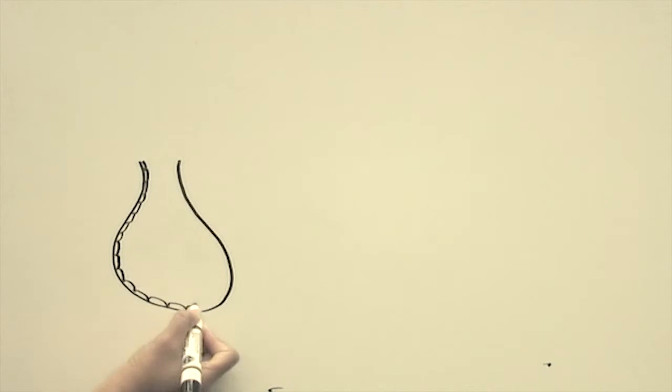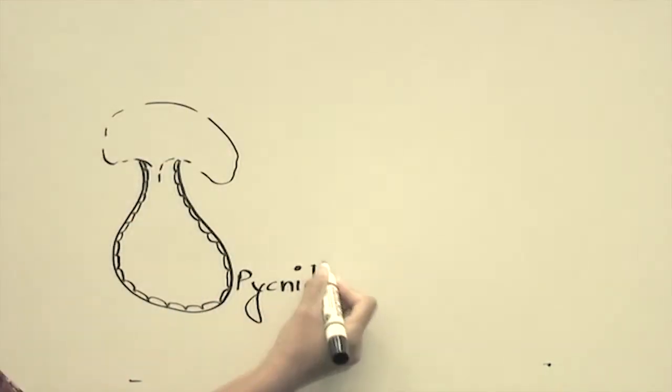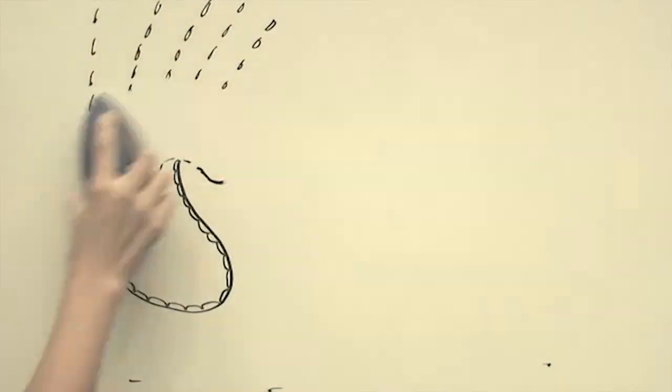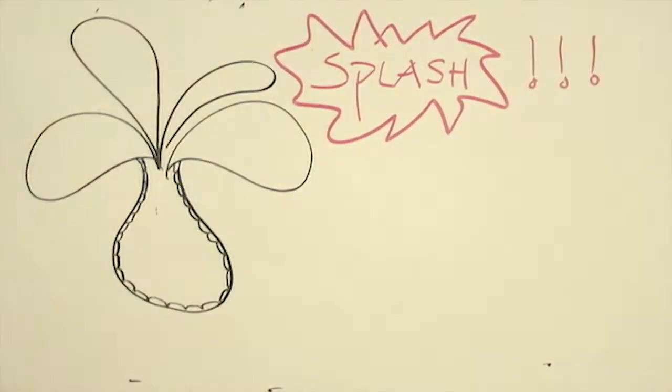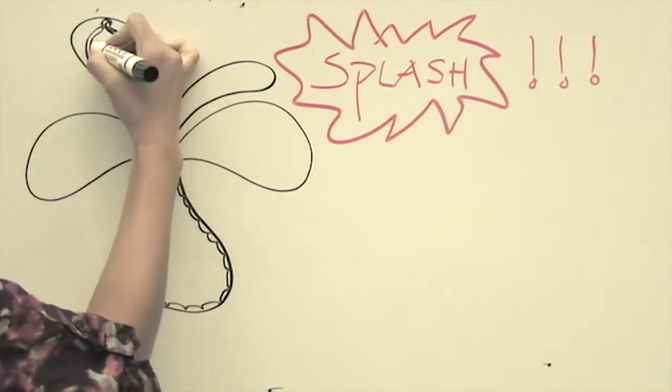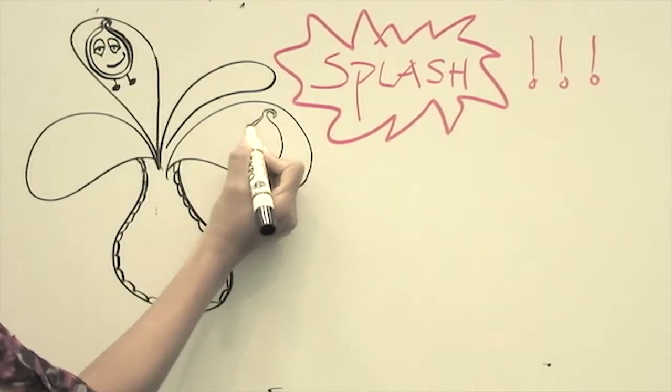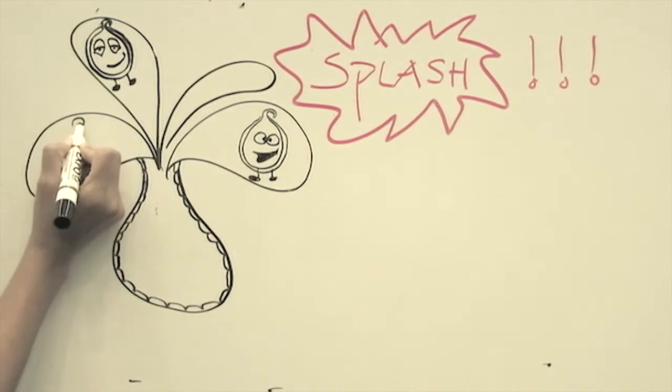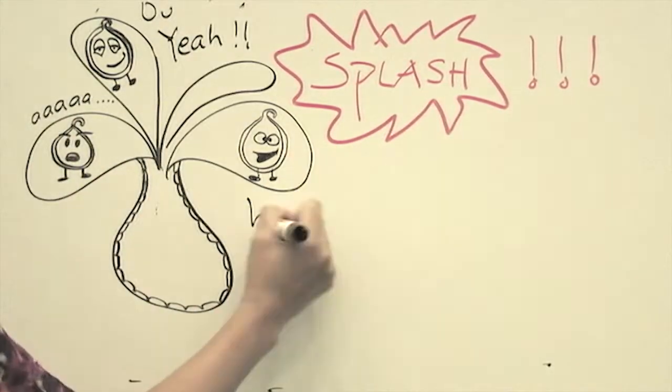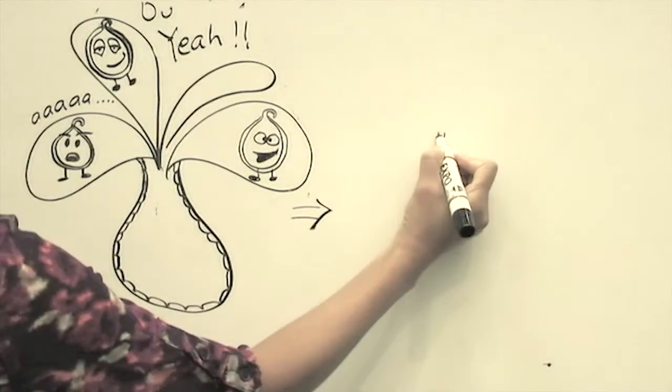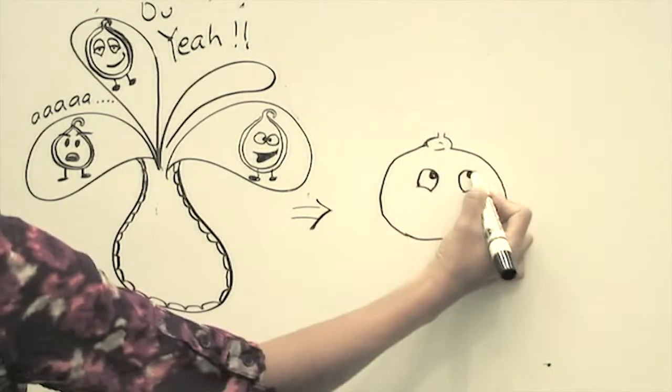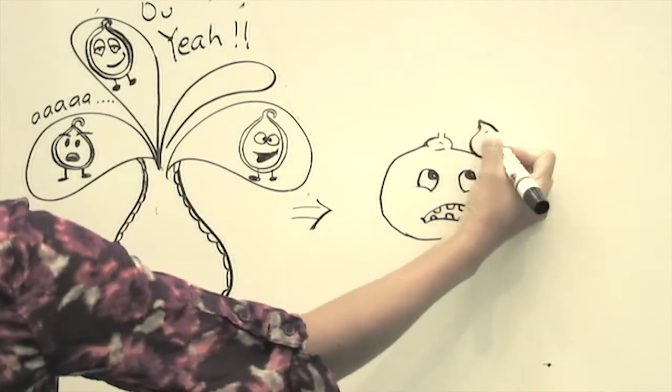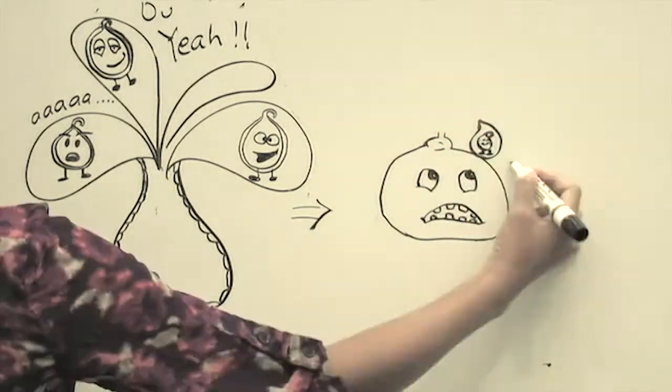After the fruit lesions mature, pycnidia are produced and later oozes of conidia come out. During rainfall or irrigation, these oozes are washed out by the water. So here is the cartoon version of the dispersal process. Different expressions of the conidia are shown here. And then these conidia are carried to the nearby fruits and leaves on the water droplets and cause disease.